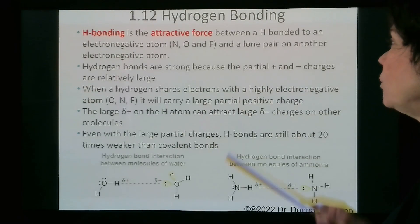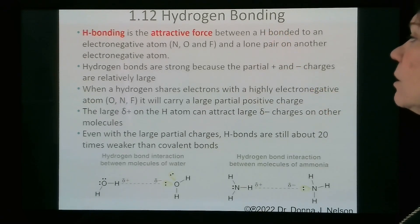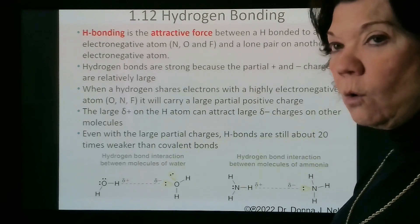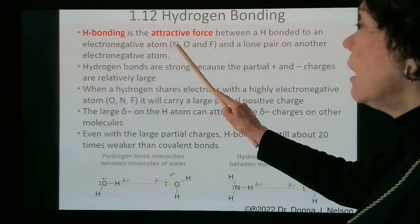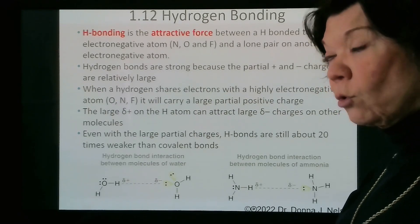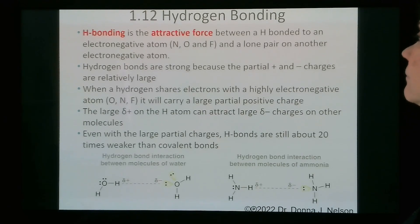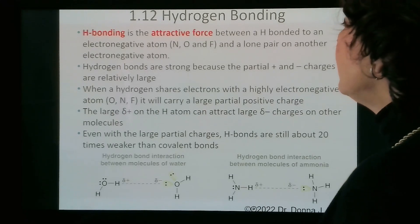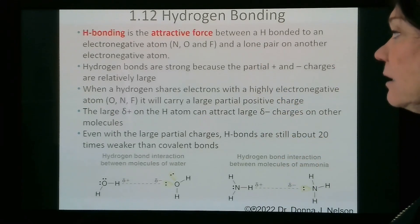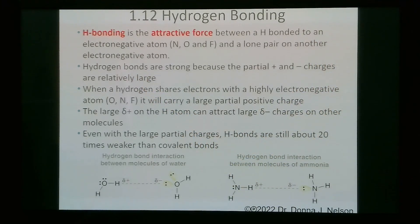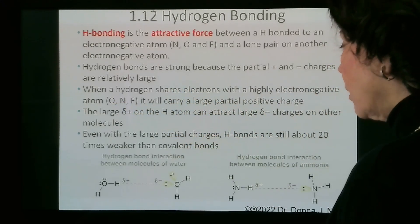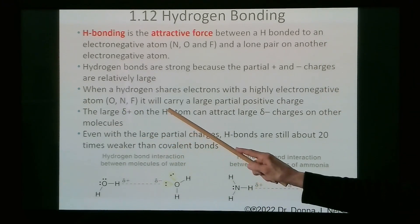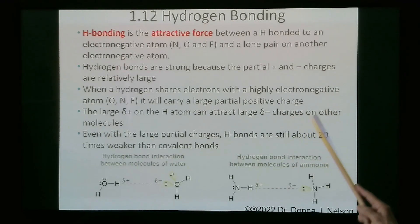Hydrogen bonding is the attractive force between a hydrogen bonded to an electronegative atom — nitrogen, oxygen, or occasionally chlorine — and a lone pair on another highly electronegative atom. Hydrogen bonds are strong because the partial positive and partial negative charges are relatively large. When a hydrogen shares electrons with a highly electronegative atom, it carries a large partial positive charge, and that large partial positive on the hydrogen can attract the large partial negative charges on other molecules.